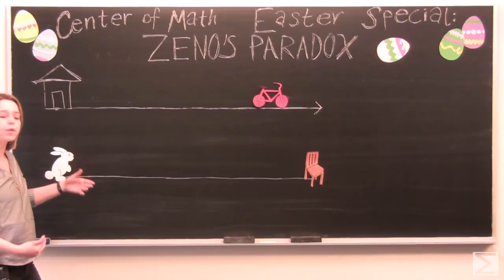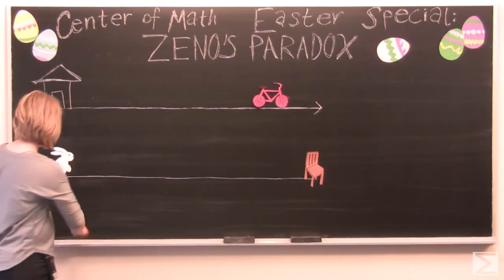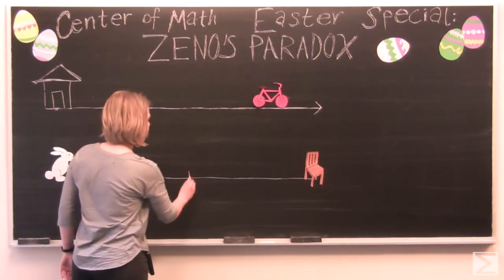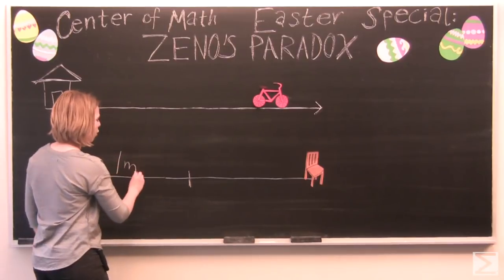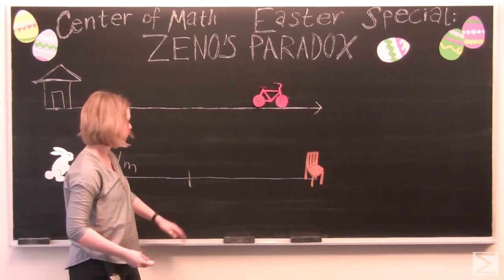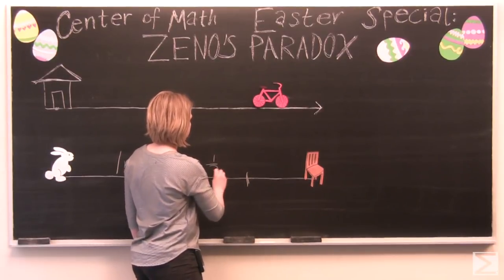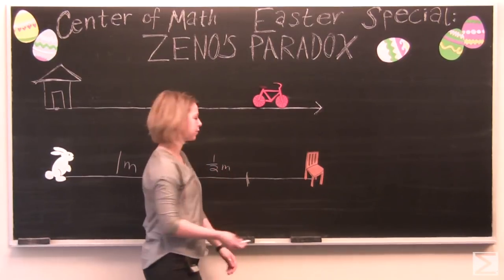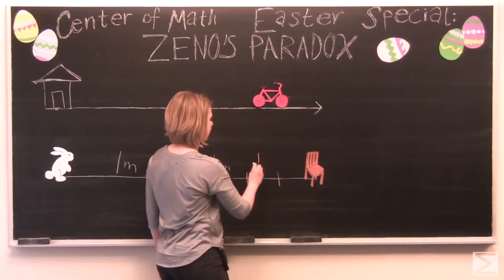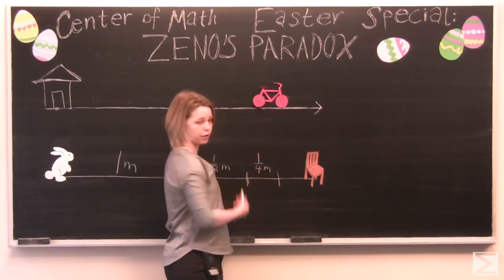So the Easter Bunny, we can think of this in halves. The Easter Bunny is going to travel one meter of the two meters. And then the Easter Bunny is going to travel half that distance again, one half meter. And then he'll travel one half again. So another quarter meter.